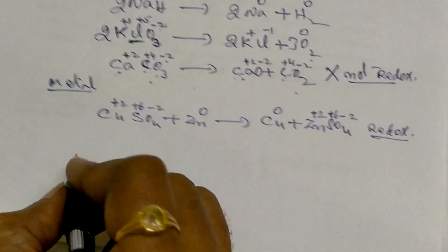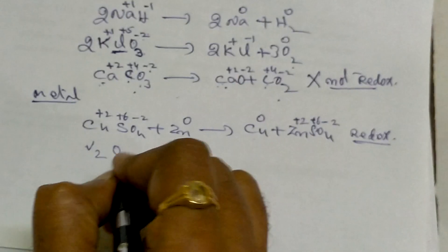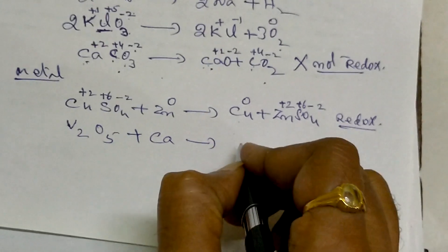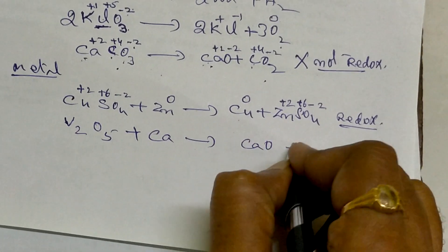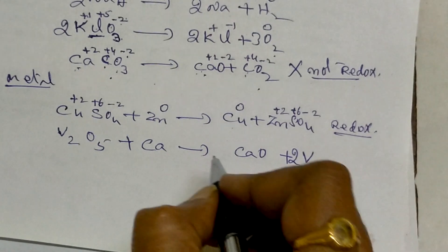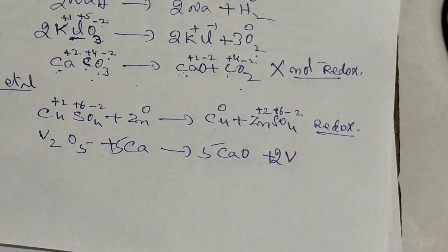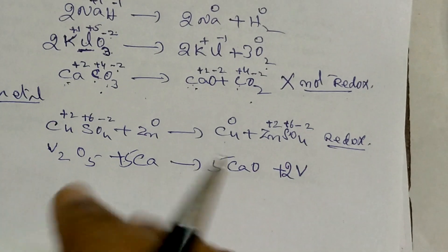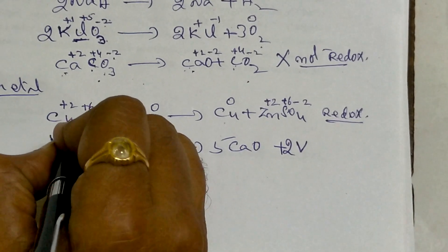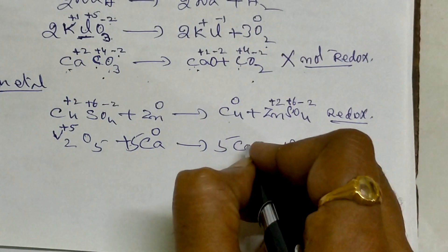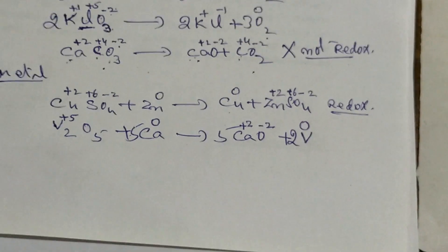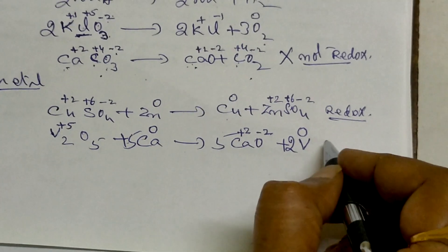One more variety: vanadium pentoxide V₂O₅ reacting with calcium gives CaO plus vanadium. Balanced: V₂O₅ plus 5Ca gives 5CaO plus 2V. Vanadium is plus 5 in V₂O₅; calcium is 0 before and plus 2 after; vanadium becomes 0. This is also a classic example of metal-metal displacement and a redox reaction.